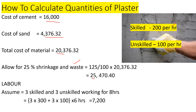For labor, we assume three skilled workers at 200 shillings per hour and three unskilled workers at 100 shillings per hour, all working for eight hours. The total labor cost is (3 × 200 + 3 × 100) × 8 hours, giving us 7,200 shillings.